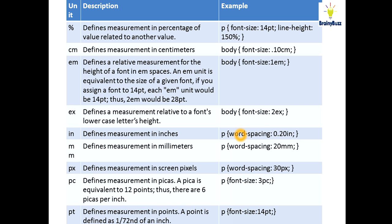Another thing you have is CM—you can define the measurement in centimeters. EM defines a relative measurement for the height of a font in EM spaces. EM is equal to the size of the given font. That means if you have assigned 14 point to one particular font and in another place you mention 2em, that means it will be 28 points.